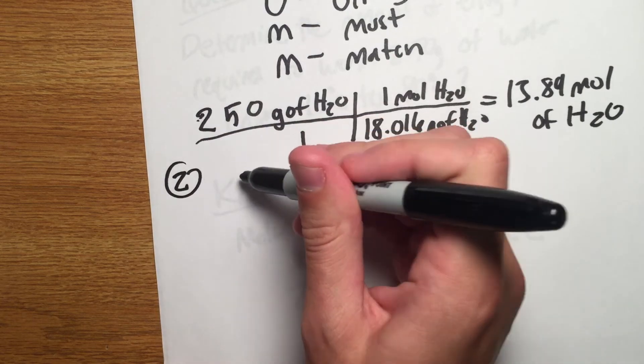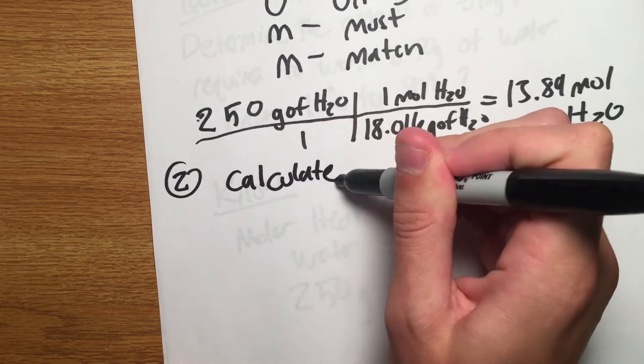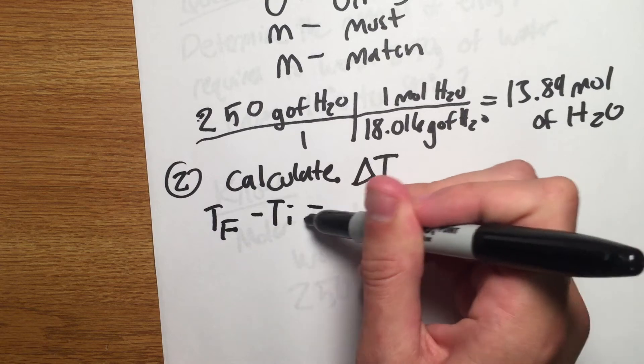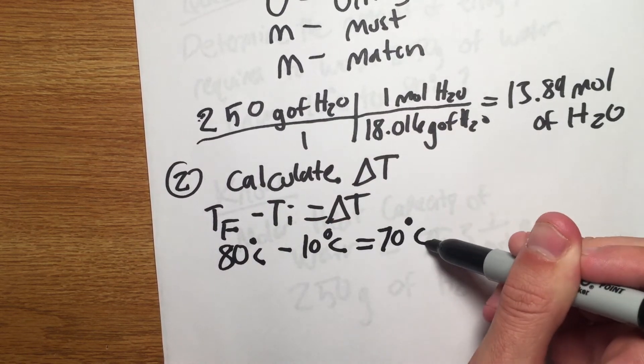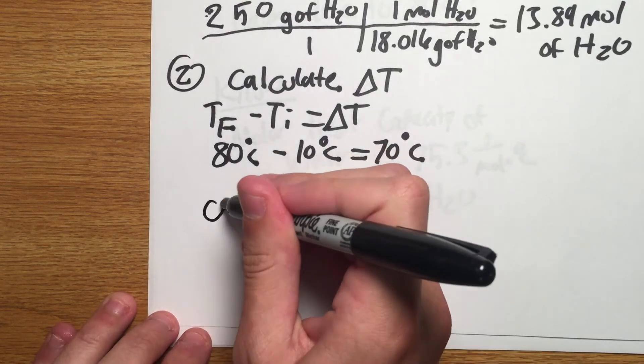Next, we must calculate delta T. To do this, take the final temperature of water which in this case is 80 degrees Celsius and subtract the initial temperature of water, which is 10 degrees Celsius. The change of temperature, or delta T, is 70 degrees Celsius.